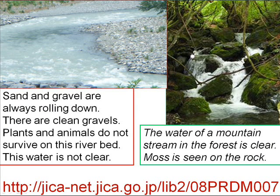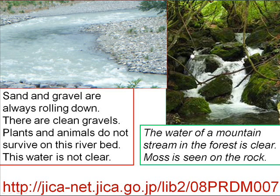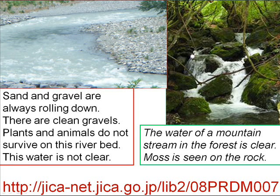Sand and gravel are always rolling down, so the gravels remain clean. Plants and animals easily flush out and do not survive on the riverbed, so this water is not clear. However, the water of a mountain stream in the forest is clear, and moss is seen on the rocks.